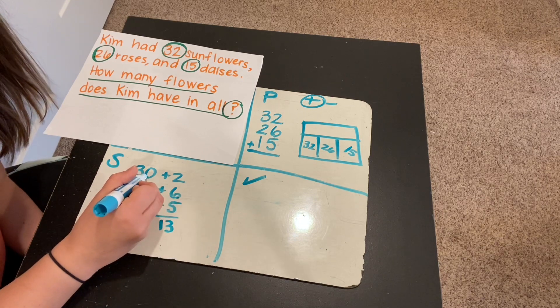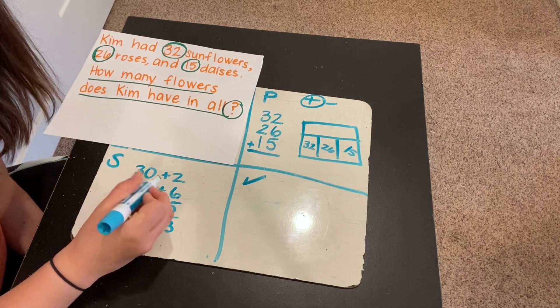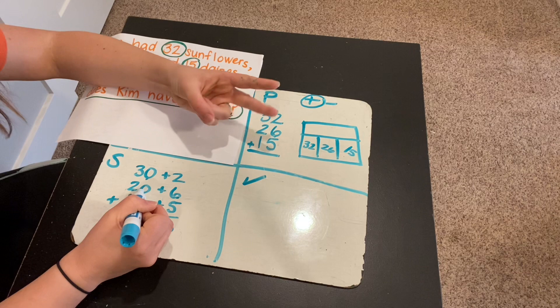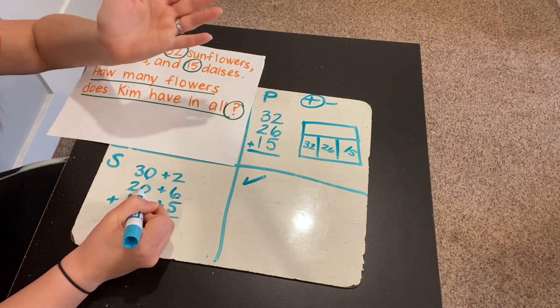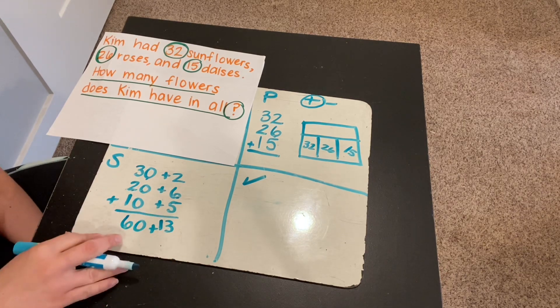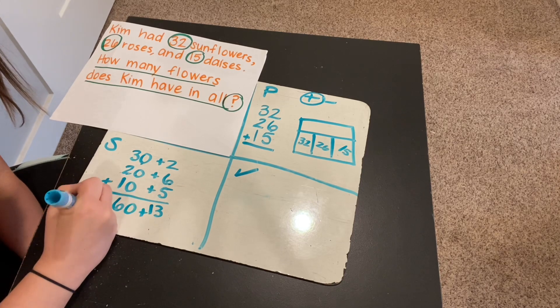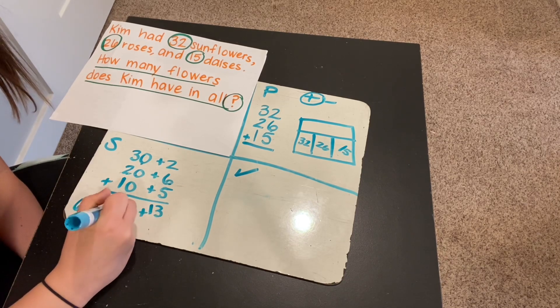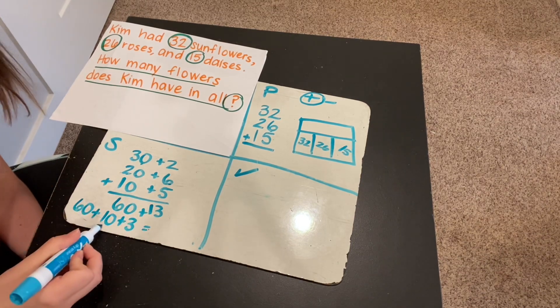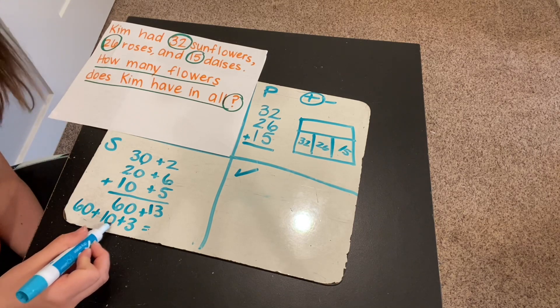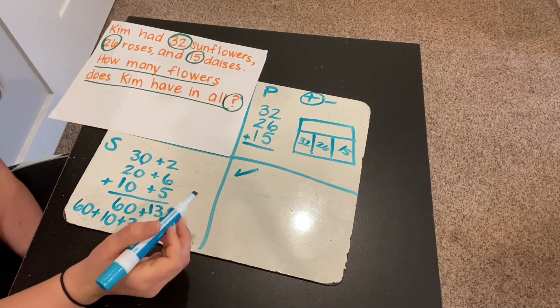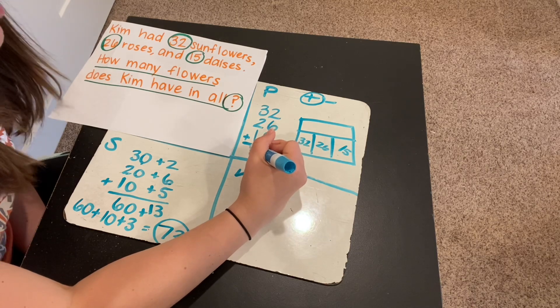And then 30 plus 20 plus 10. So 30 plus 20. 30, 40, 50. That's adding 20. And then plus 10 more. 50, 10 more is 60. Okay, so now I need to do 60 plus 13. I can expand it out even more now and do 60 plus 13 is 10 plus 3. So 60 plus 10 plus 3. 60 plus 10 is 70. And 70 plus 3 is 73. So I think that 32 plus 26 plus 15 is 73.